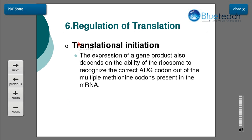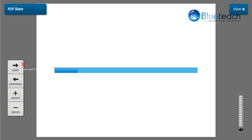Regulation of translation is another control point. During translation, control is carried out with the help of the initiation codon — the AUG codon. For an mRNA to get translated, the ribosome has to recognize the correct initiation codon; otherwise the correct protein will not be produced. The expression of the gene product also depends upon the ability of the ribosome to recognize the correct AUG codon out of the multiple methionine codons present in the mRNA. This also determines the kind of protein being synthesized.